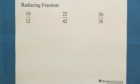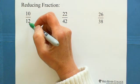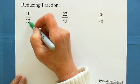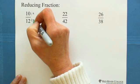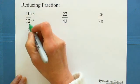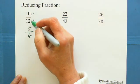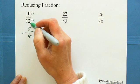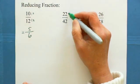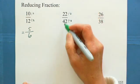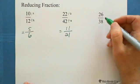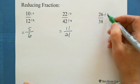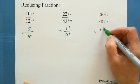Let's see an application: how to use divisibility to reduce fractions. 10 over 12 — 10 is even, 12 is even, both divisible by 2, so divide both by 2 to get 5 over 6. 22 over 42 — both even, divide by 2, you get 11 over 21. 26 over 38 — both even, divide by 2, and you get 13 over 19.